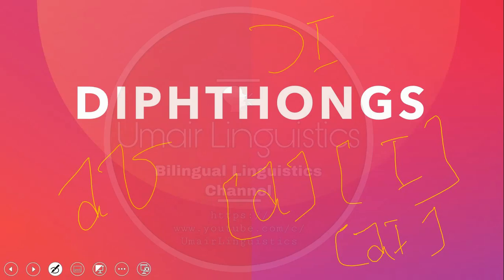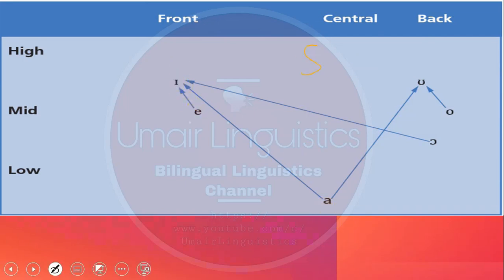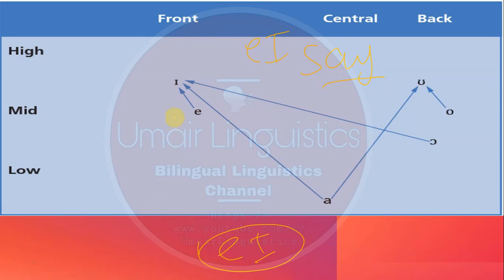There are also other diphthongs. We can make a chart for diphthongs showing the tongue gliding from one position to another. For example, the 'eye' diphthong shows the tongue gliding from a lower to a higher vowel. For the diphthong in 'say', the tongue glides from mid to a higher position. For 'ou', the tongue moves from mid-back to front-high position.